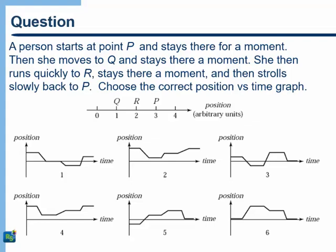Here's a more difficult question. A person starts at a point P and stays there for a moment. Then she moves to Q and stays there for a moment. She then runs quickly to R, stays there a moment, and then strolls slowly back to P. Choose the correct position versus time graph. Go ahead, pause the video and make your selection. Let's look at this together.